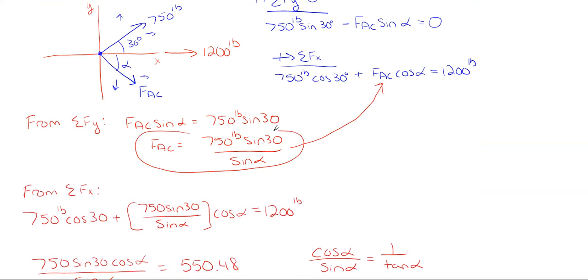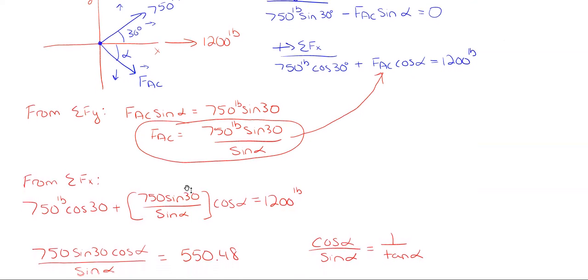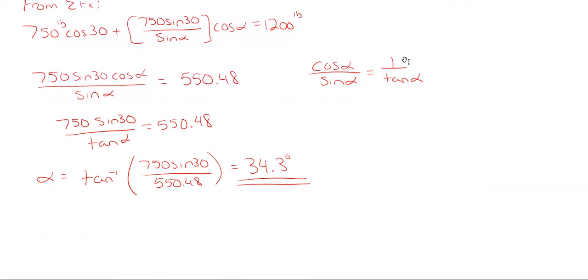So let's go ahead and just fill that in. So FAC will be 750 sine of 30 divided by the sine of my angle of alpha, which is 34.3 degrees. And this gives me an FAC of 665.5 pounds of force in that general down-right direction.